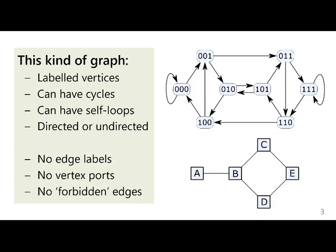More specifically, I'm looking for graphs with labeled vertices and any connectivity. You're allowed to form cycles, you're allowed to form self-loops. I'm interested in directed or undirected graphs. And I do not consider edge labels in this talk, in this paper.